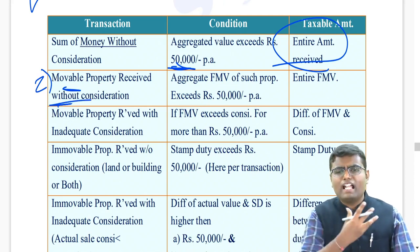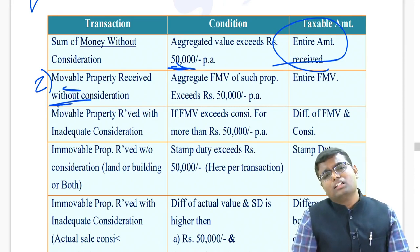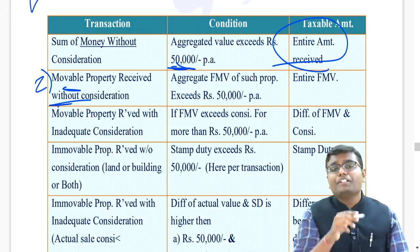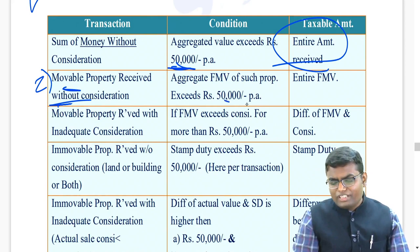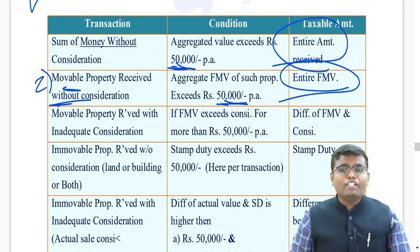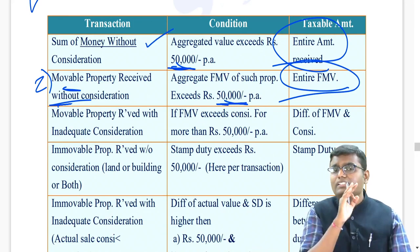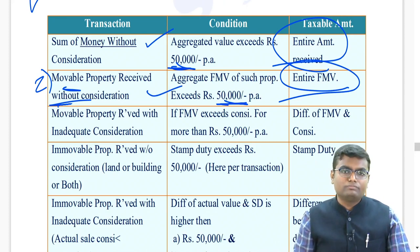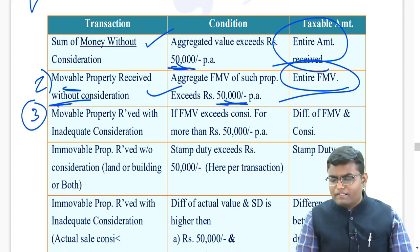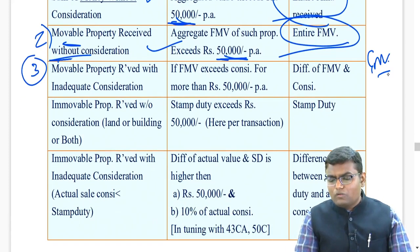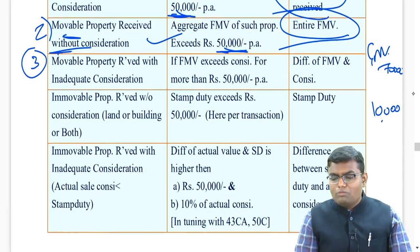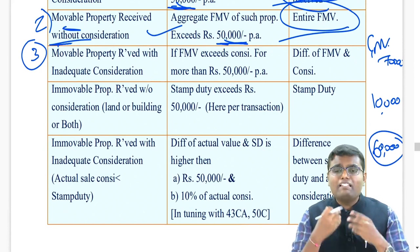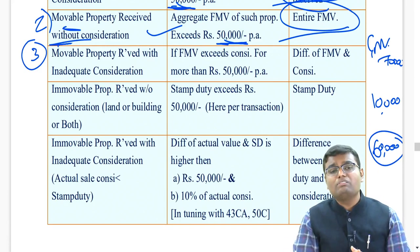The second transaction: movable property received without consideration - you receive movable property such as shares, securities, jewelry, archaeological collections, paintings, drawings, sculptures, bullion - and you receive it without consideration. Then see what is the total fair market value of such gifts during the entire year. If in total it exceeds ₹50,000 per annum, the entire fair market value will be taxable. Point to be noted: the limit of ₹50,000 for sum of money is different and the limit of ₹50,000 for movable property without consideration is different - all five transactions have separate limits of ₹50,000. Third: movable property received with inadequate consideration. For example, jewelry with fair market value ₹70,000 is purchased for ₹10,000 - the gift difference is ₹60,000. This difference should be more than ₹50,000; if so, the entire difference of ₹60,000 will be taxable.